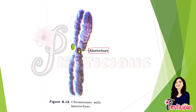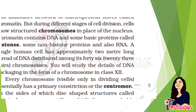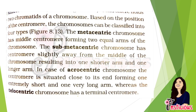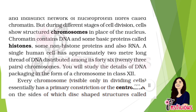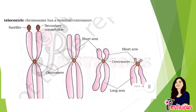Chromosomes have disk-shaped structures attached to them called kinetochores — note that kinetochores and centromere are different things. Every chromosome has a primary constriction called the centromere, present in the middle of a chromosome. The disk-shaped structures on the sides are called kinetochores. Based on the position of the centromere, chromosomes are classified: metacentric has the centromere exactly in the middle, and sub-metacentric has it slightly off-center.